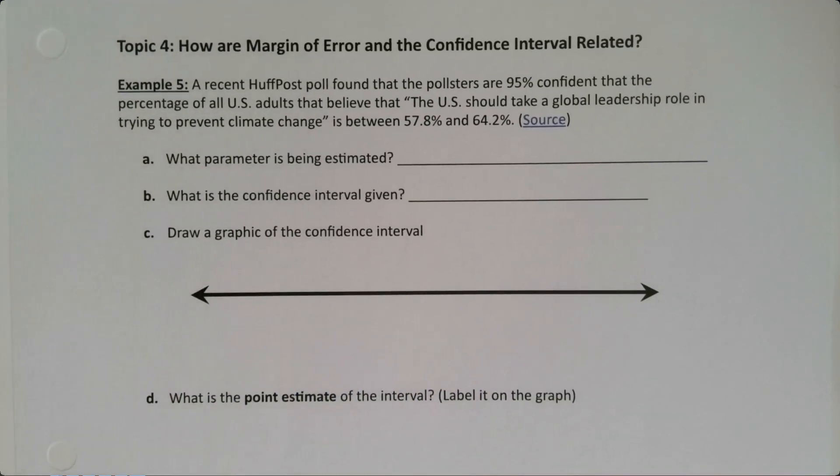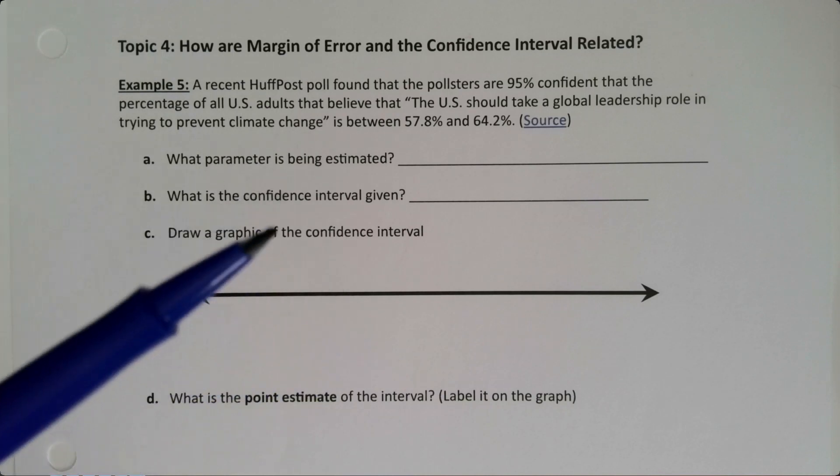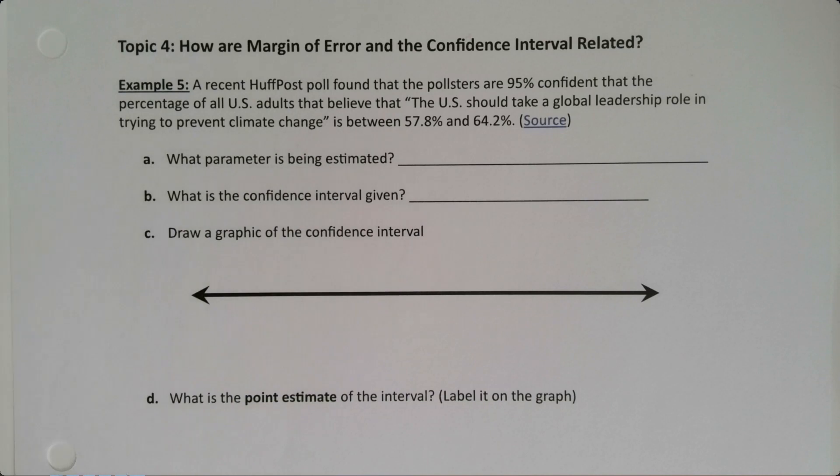A recent HuffPost poll found that the pollsters are 95% confident that the percentage of all US adults that believe that, quote, the US should take a global leadership role in trying to prevent climate change, end quote, is between 57.8% and 64.2%.